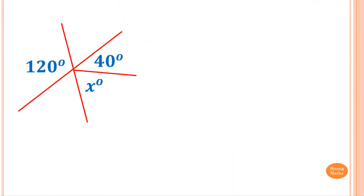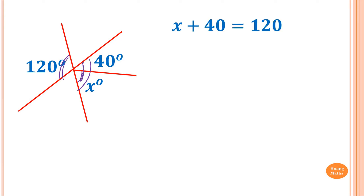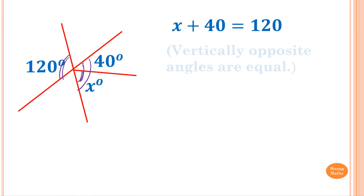Example 2: We know that this angle is equal to this angle here. In other words, X plus 40 degrees is equal to 120. The reason is vertically opposite angles are equal.